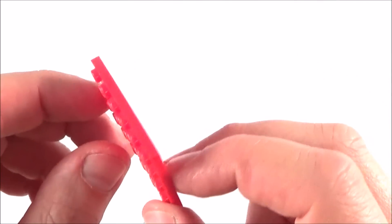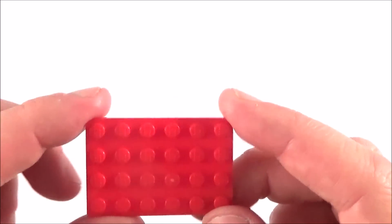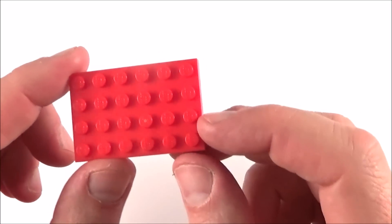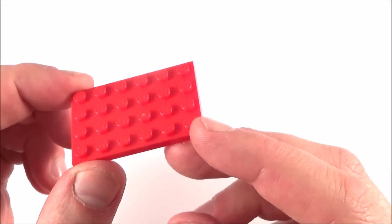I have an object here that is a fairly one-dimensional shape and something that we can look at in physics in order to simplify our calculations is the centre of mass or the centre of gravity.